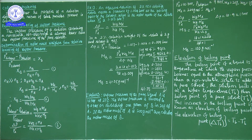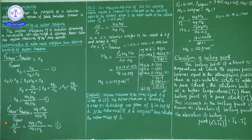Problem 1: An aqueous solution of 2% non-volatile solute exerts a pressure of 1.004 bar at the boiling point of the solvent. What is the molar mass of the solute when P⁰_A is 1.013 bar? From the question, 2% non-volatile solute means in 100 grams of solution, 2 grams is the solute. So the weight of solute W_B is 2 grams.